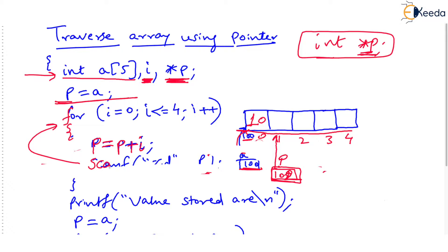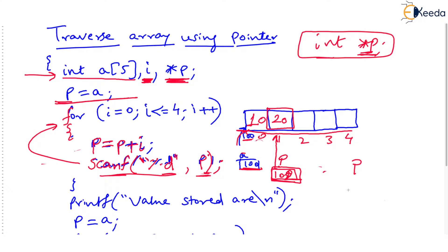Now what will this scanf mean? You are entering some value from the keyboard, and it should get stored at the address given by p. p is now 102, which is the address of a[1] — the same as 'a plus 1'. So indeed p here is equivalent to '&a[1]' and to 'a plus 1'. This shows how many possibilities open up due to this concept.